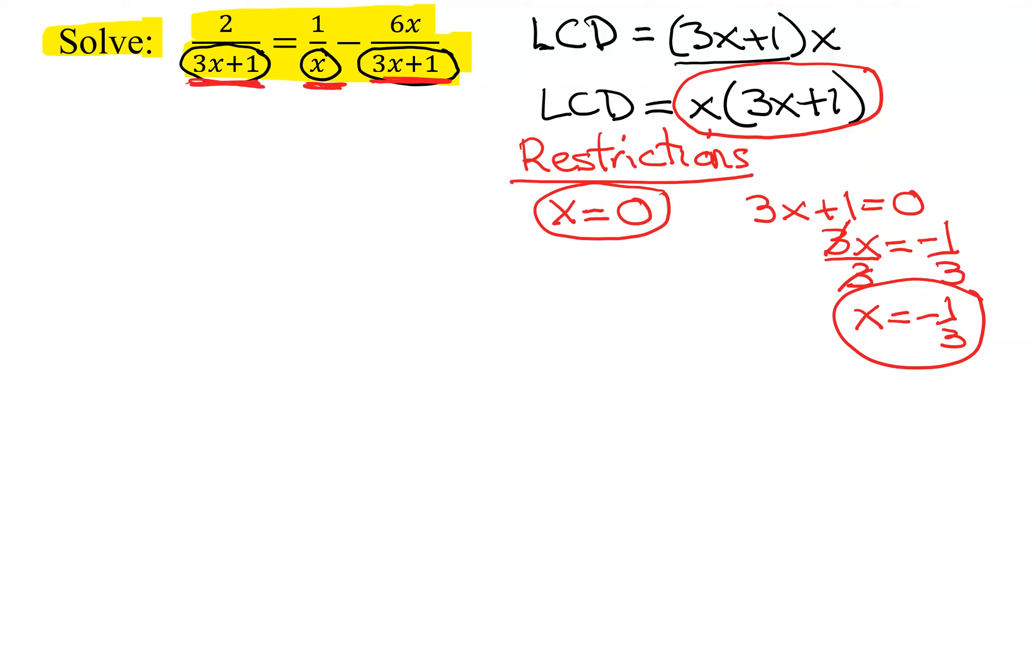So now we're ready to multiply all three terms of my original equation by the LCD. So I'm going to have x times 3x plus 1. I like to put it over 1, it just makes it easier when I have to reduce. Times 2 over 3x plus 1 equals 1 over x. Now I'm going to multiply that by the LCD, x times 3x plus 1.